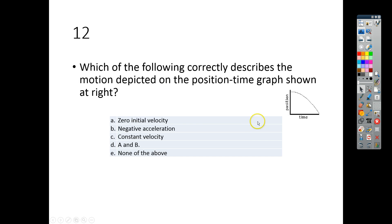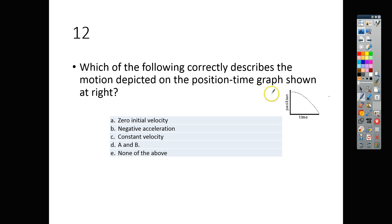For number 12, which of the following correctly describes the motion depicted on the position time graph shown at the right? The first thing we can look at is right here you'll notice that there's a flat line. And a flat line for position versus time means that our original velocity is equal to 0, so we know this is right.